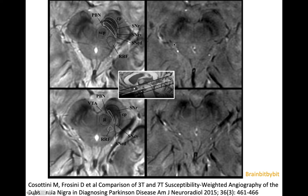On the 3 tesla images, when there is loss of the dopaminergic neurons that are slightly hyperintense, this might lead to blurring of the boundary between the red nucleus and the also hypointense reticulata part of the substantia nigra.